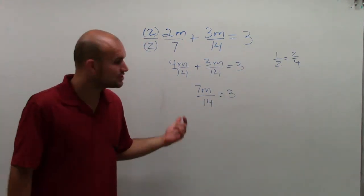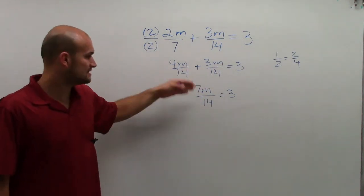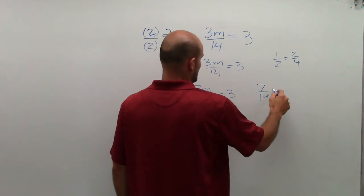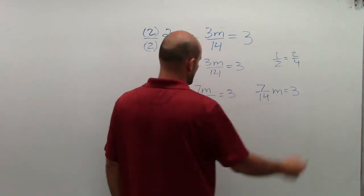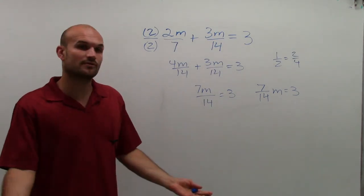Now, what we can see is we have a two-step equation. I have multiplication of m and division by m. Now, there's a couple ways we could write this. You could write it as 7 14ths m equals 3.